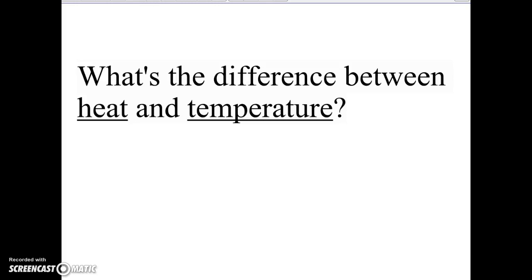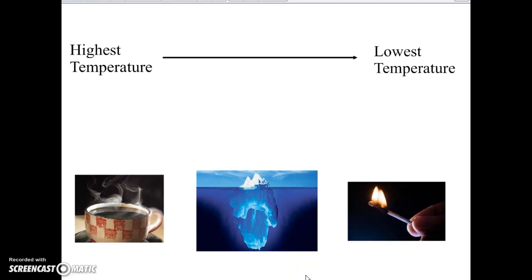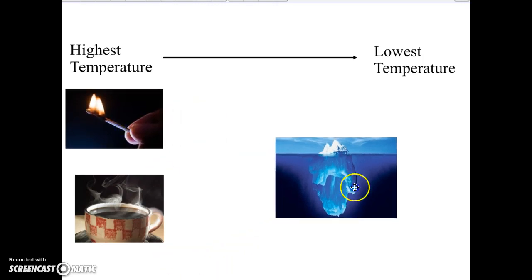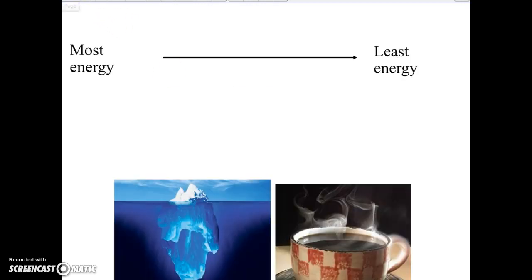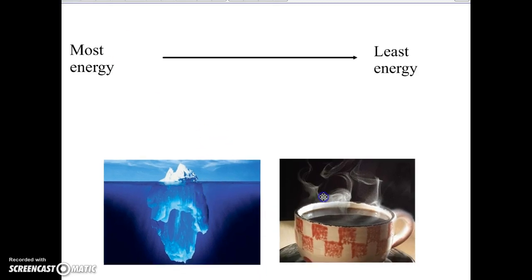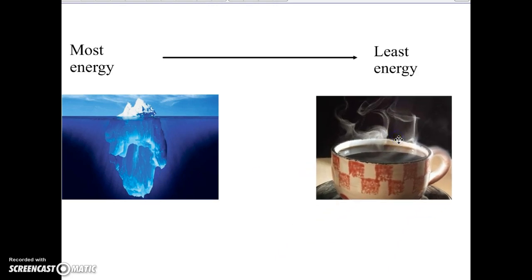Hi everybody. In this video we're going to take a look at the difference between heat and temperature. I'm going to start with a question: there are three objects on the bottom of the screen. See if you could rank them from highest to lowest temperature. Most of you are probably thinking the fire would be the hottest, the iceberg the coldest, and the hot coffee somewhere in the middle — and that would be correct. But if we try to rank them based on how much energy they have, you might be surprised, because the iceberg actually has more energy than the cup of hot coffee. By the end of this video I hope you understand why.